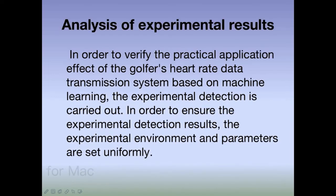Analysis of the experimental results: In order to verify the practical application effect of the golf player heart rate data transmission system based on machine learning, the experimental detection is carried out. In order to ensure reliable experimental detection results, the experimental environment and parameters are set uniformly.